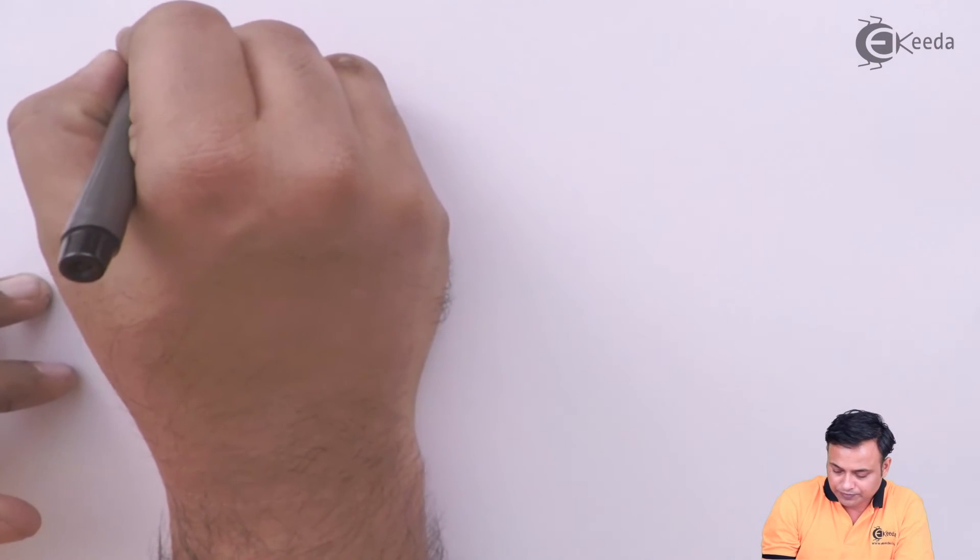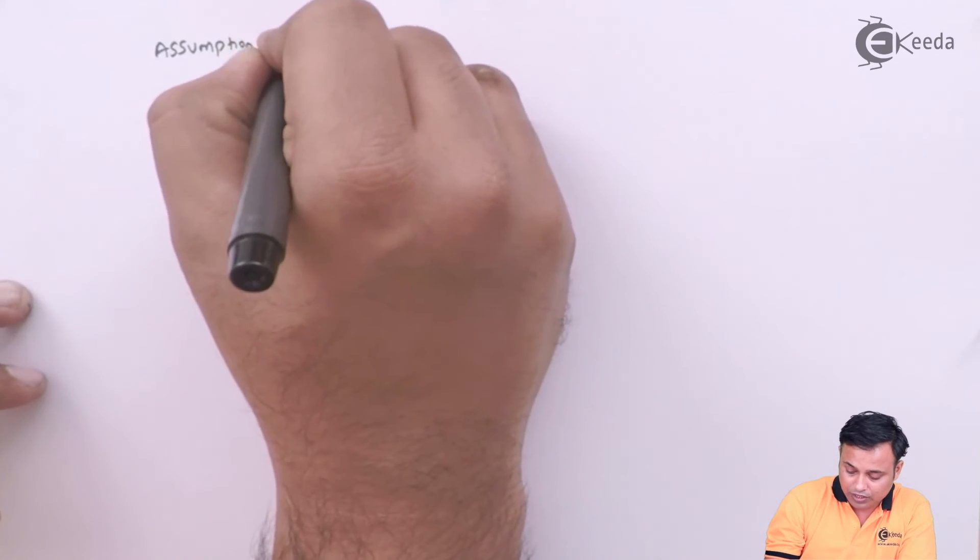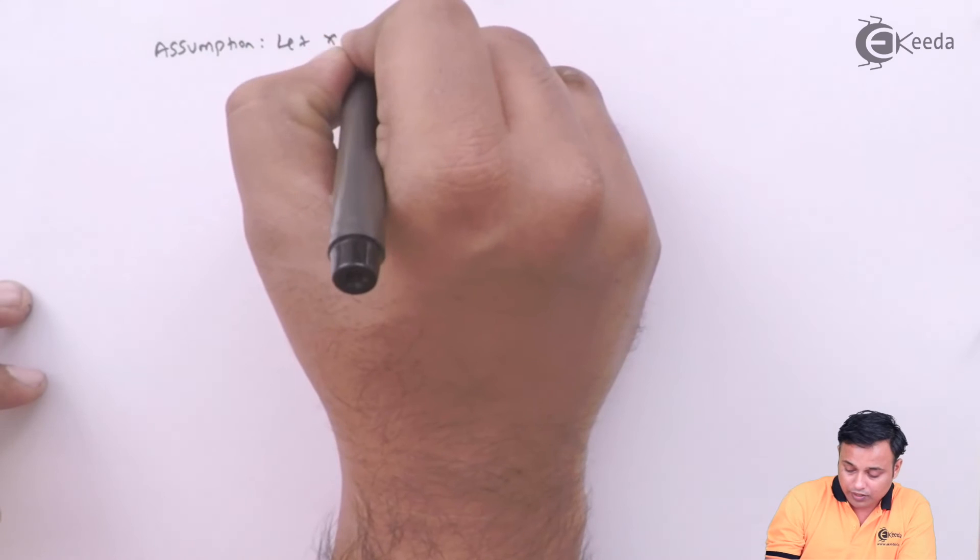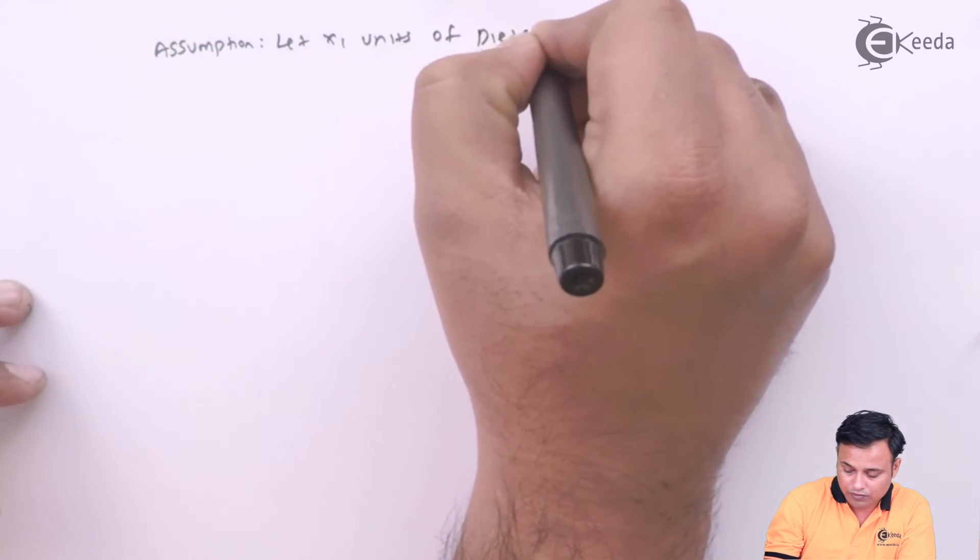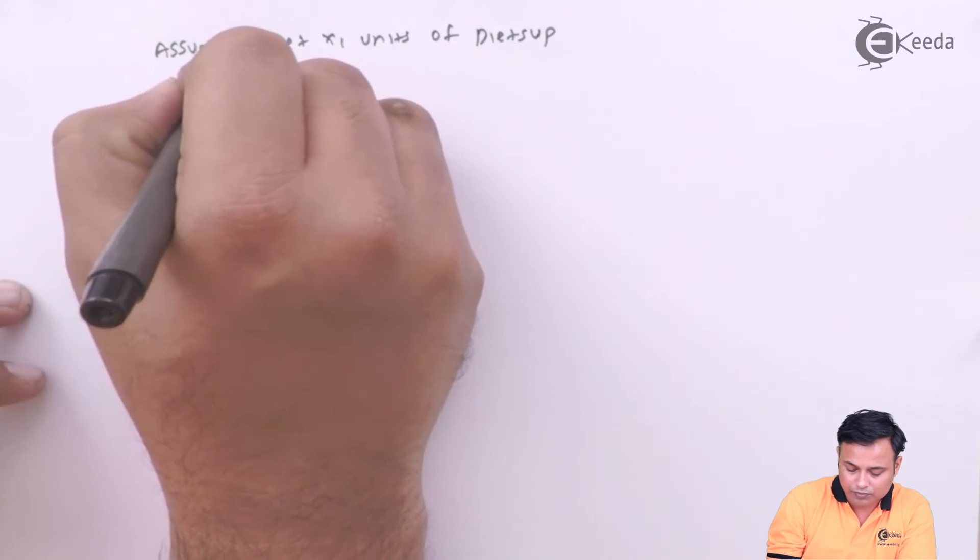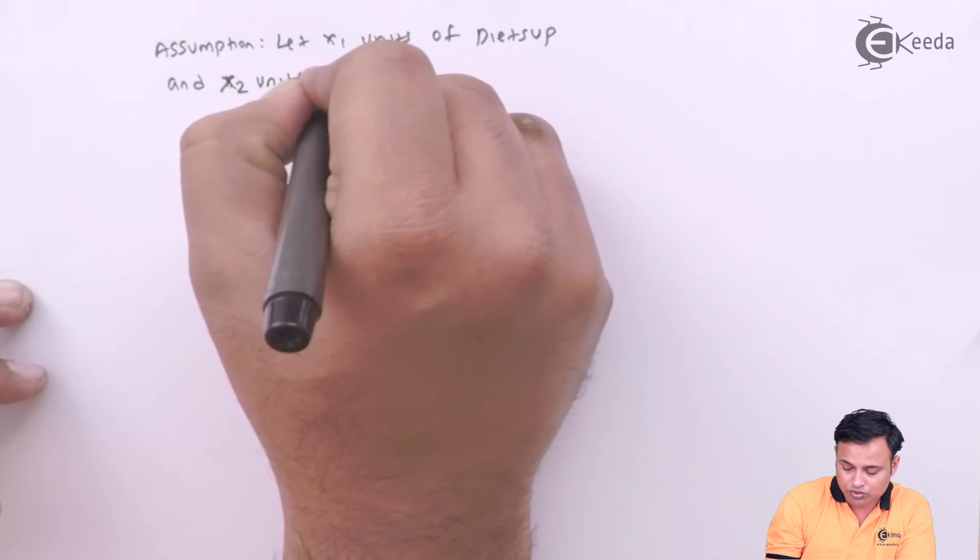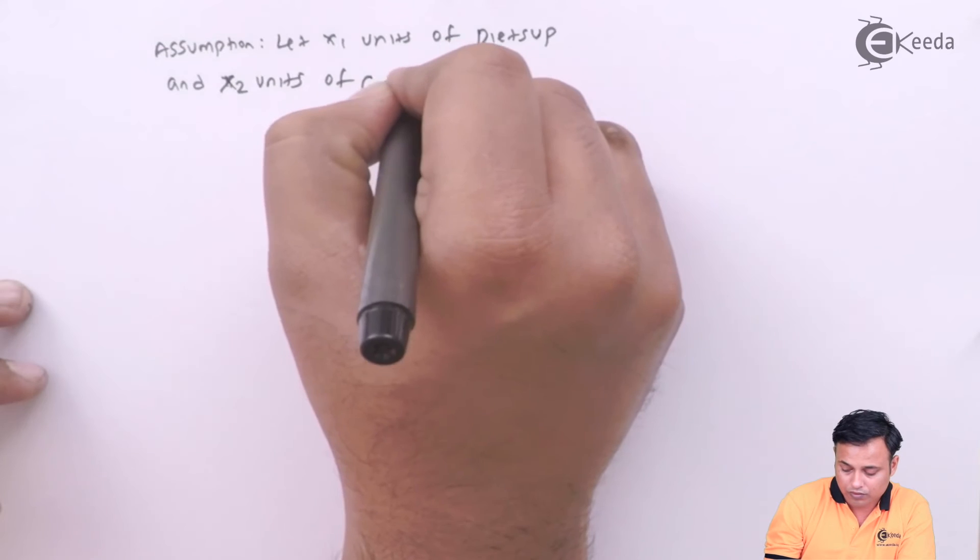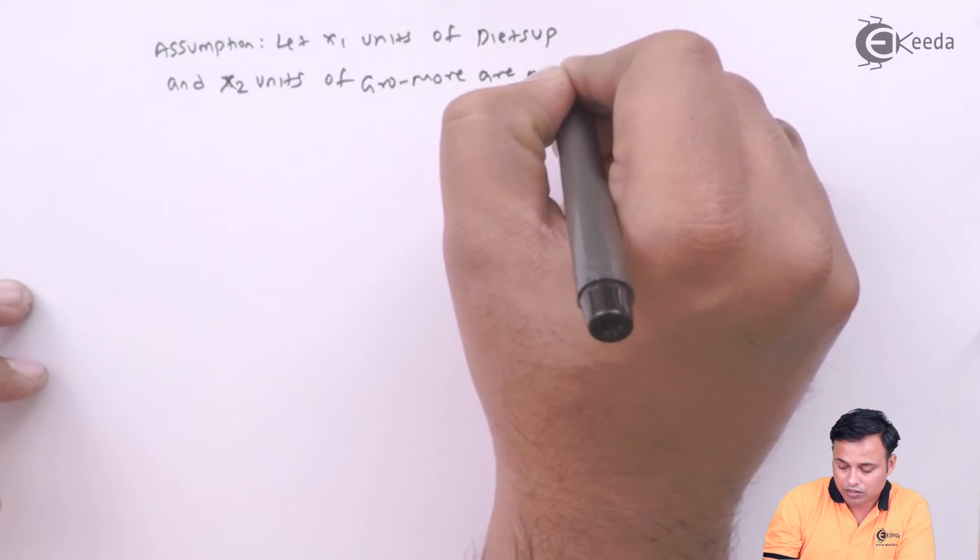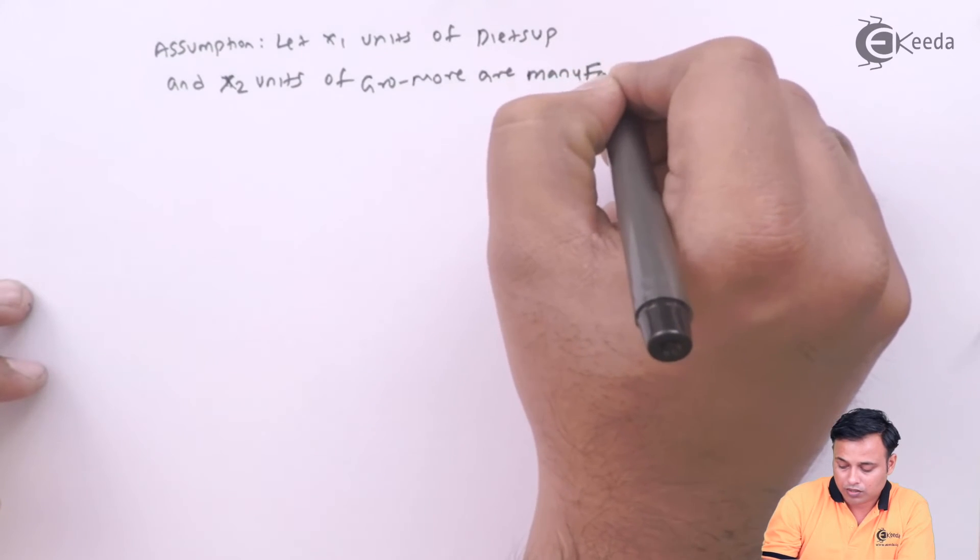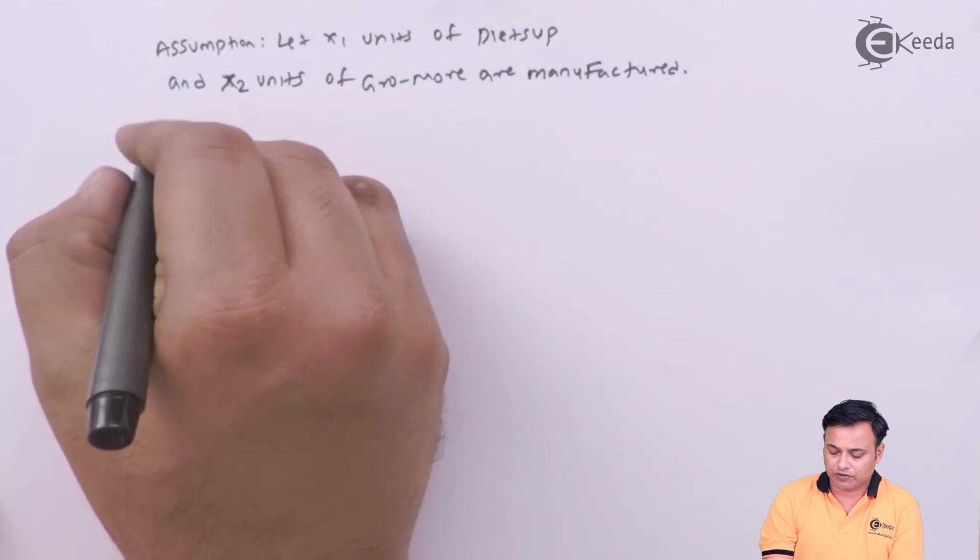That is my first basic assumption. Let x1 units of Diet-Sup and x2 units of Gro-More are manufactured. So we made the assumptions.